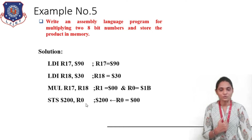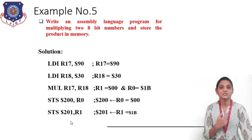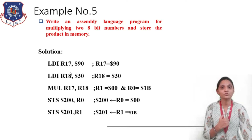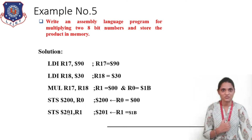So our instruction will be STS 200, R0 — this will store the content of register R0 to location 200. And then we use the instruction STS 201, R1 — this will store the content of register R1 to location 201. So this is basically the multiplication operation: first we load the numbers into registers, then use the MUL instruction, and then use STS to store the result to memory.